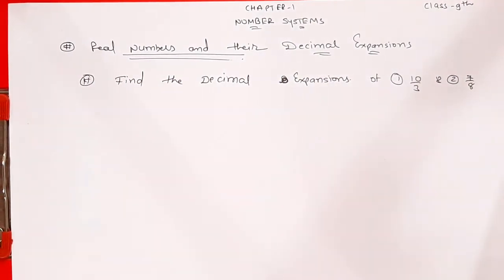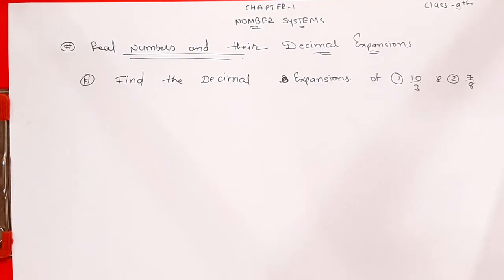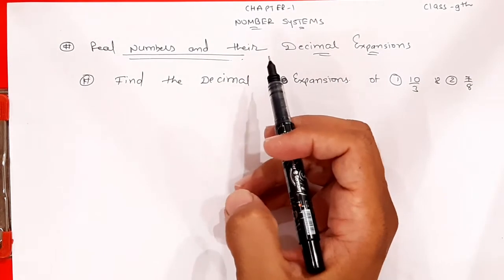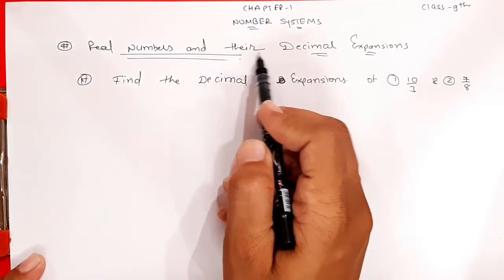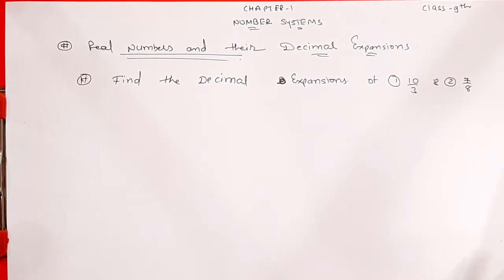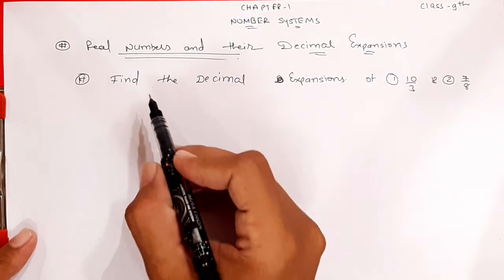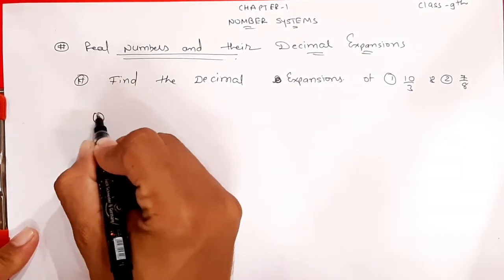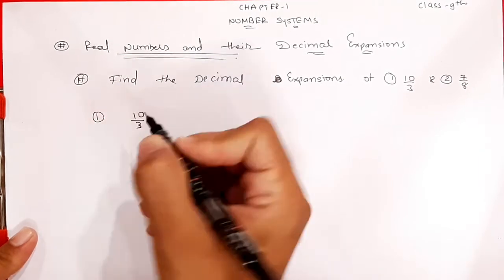In the last video we discussed about the different kinds of numbers — exercise 1.1 ke baare mein humne previous video mein discuss kiya tha. Aaj hum baat karenge real numbers and their decimal expansion. Is ke andar kaafi example likhenge. Is tarike ke questions pooche jaate hain: find the decimal expansion of 10 upon 3.